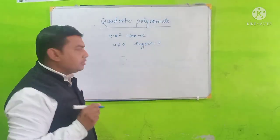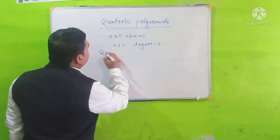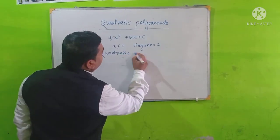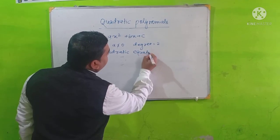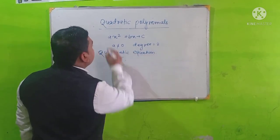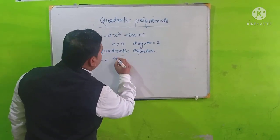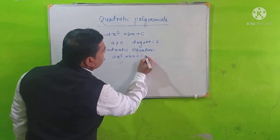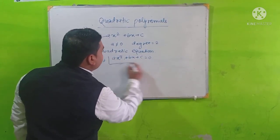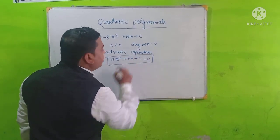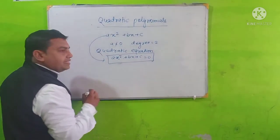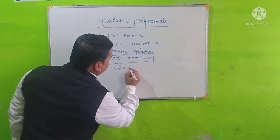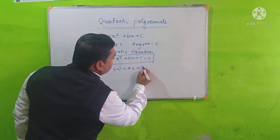Now think about the quadratic equation. What is a quadratic equation? If it is written as ax squared plus bx plus c is equal to 0, then it is called a quadratic equation.